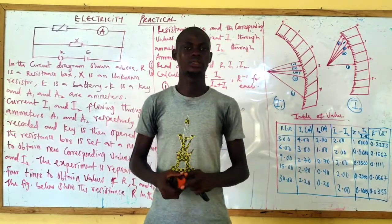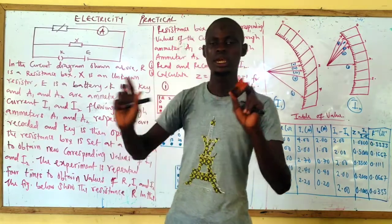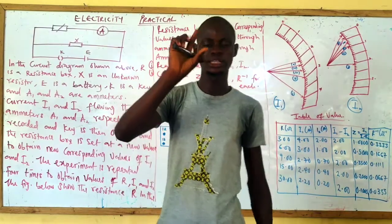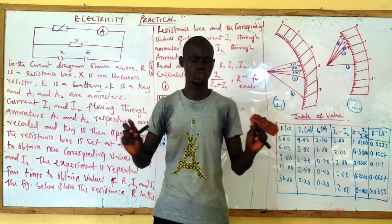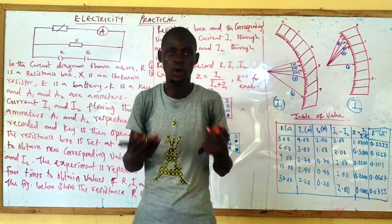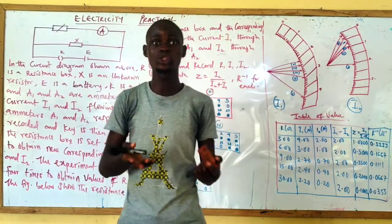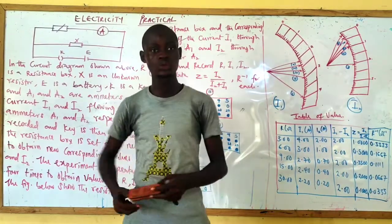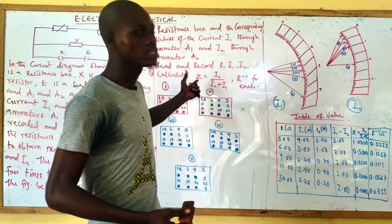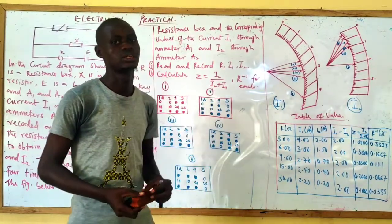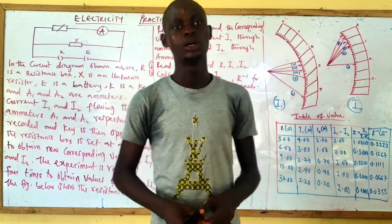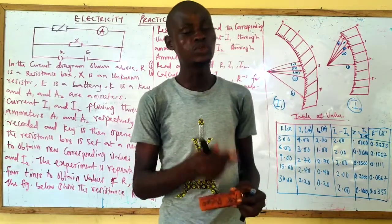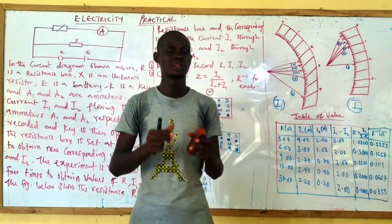Now, how do we go about this? The only thing you need in performing this practical is your ruler and pencil to measure. While there are some that do not require a pencil, you use your pencil and ruler altogether. Before I go in depth into how to take a reading for GCE physics practical, I would like you to subscribe to my channel and click on the notification bell to receive notifications of my new videos.